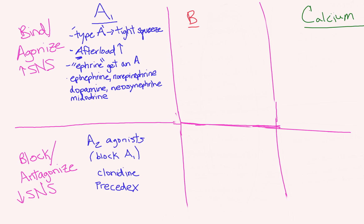Welcome back. This is the second video in the vasoactive drug series. In this series, we're talking about alpha, beta, and calcium receptors — the ABCs of vasoactive drips. In the first video, we talked about alpha receptors. I'm going to take one minute to go over some of the takeaway memory tricks from that video, and then we'll talk about beta receptors.